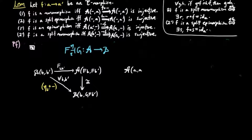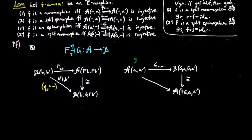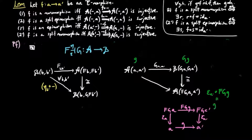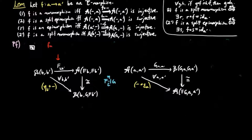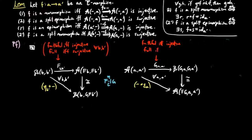Similarly, G induces a natural set map between Homsets for each pair of A objects A and A'. We have our isomorphism induced by the adjoint situation, which composes to give a set map taking the A-morphism G to epsilon_{A'}∘F∘G∘G. But by naturality of epsilon, this becomes equal to G∘epsilon_A. So this diagonal map is the pre-composition by epsilon_A natural transformation at component A'. Note that F is faithful if and only if F_{BB'} is injective, and F is full if and only if F_{BB'} is surjective for each B and B'. Similarly, G is faithful if and only if G_{AA'} is injective, and G is full if and only if G_{AA'} is surjective for each A and A'.